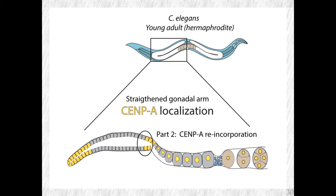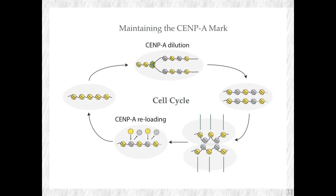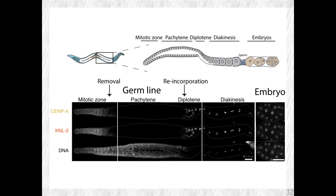Part two is maybe the more interesting one: how is Sempe able to find its way back after being completely removed? Normally we think of Sempe as never being completely removed — always diluted by replication, but then reloaded straight away or in the next cell cycle, so Sempe never loses its way. Again, in the C. elegans germline, we find something different. The question is: how can Sempe find its way back without old Sempe sticking around? To answer this, we turned our eye to KNO2, because this protein shows exactly the same localization pattern as Sempe in the adult hermaphrodite germline. We thought that maybe this interaction might have a role to play in making sure Sempe finds its way back to the right places.